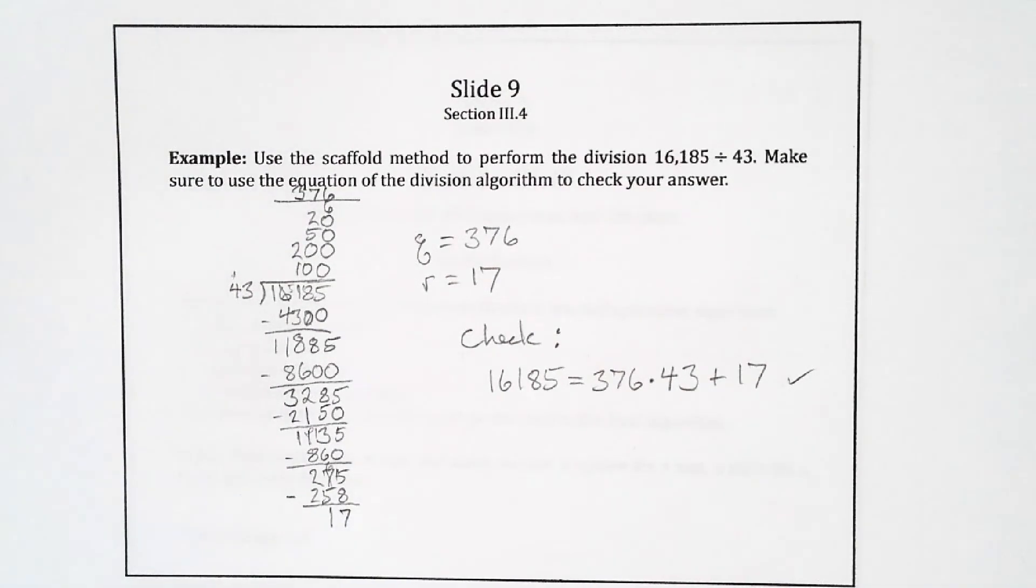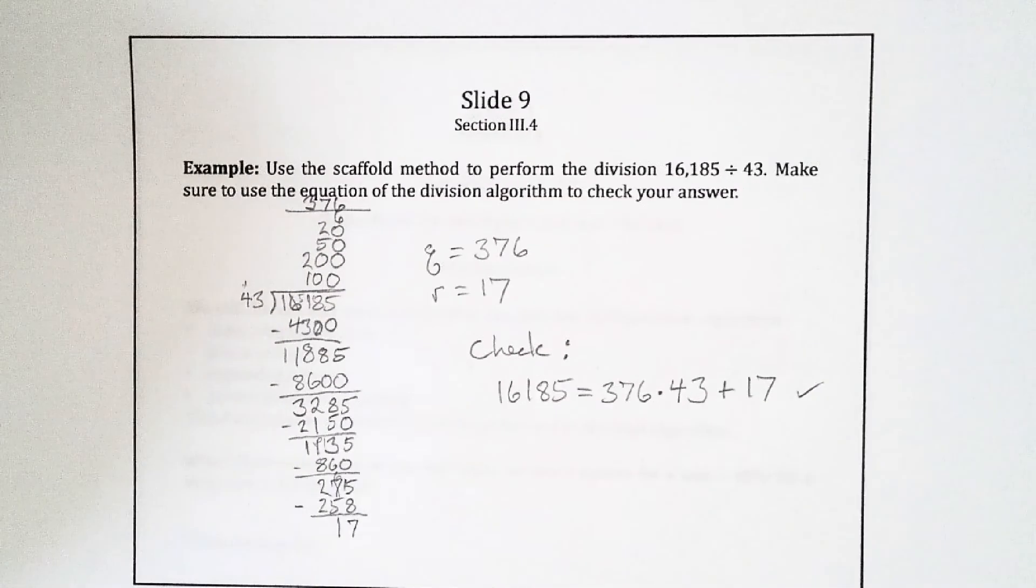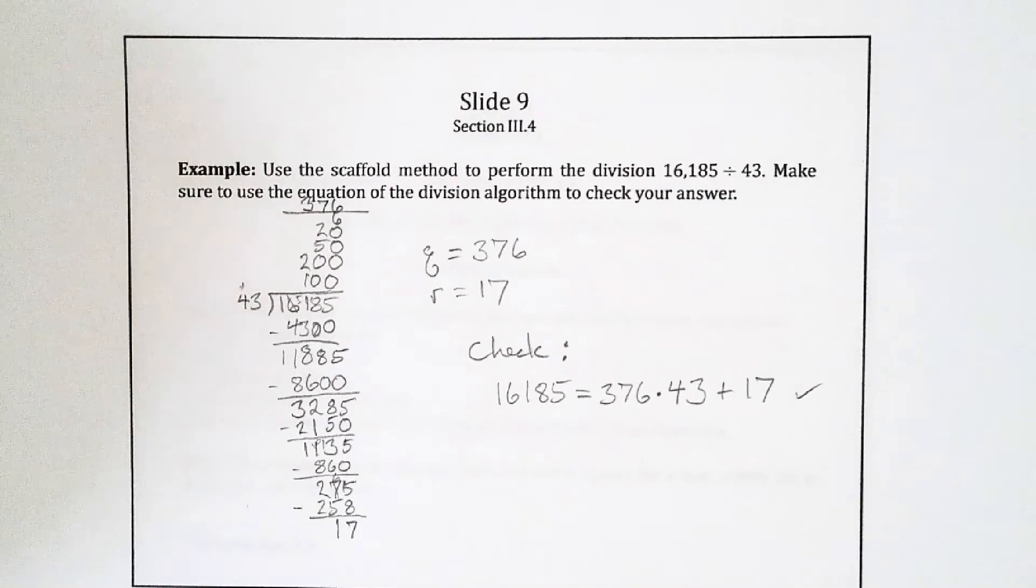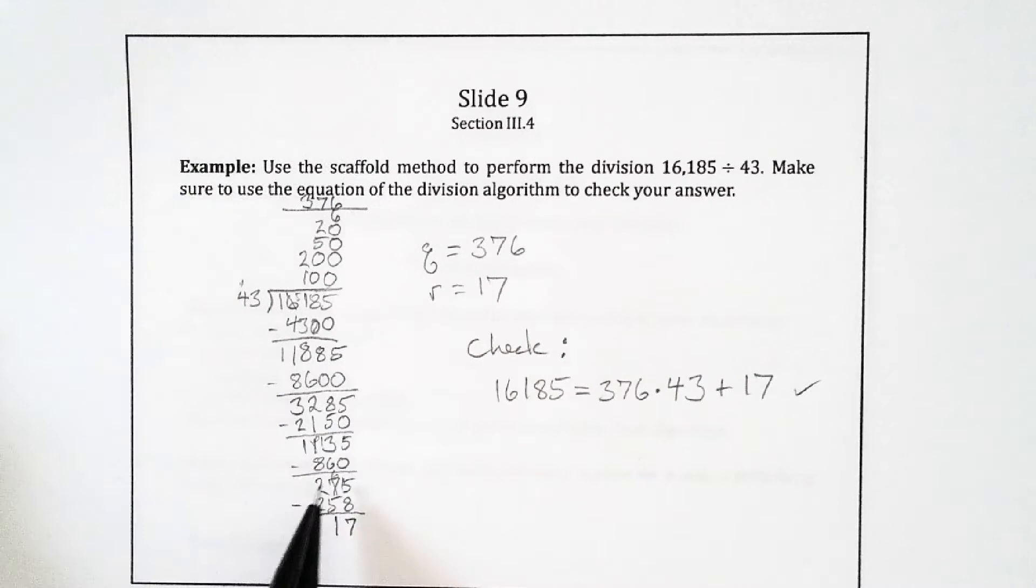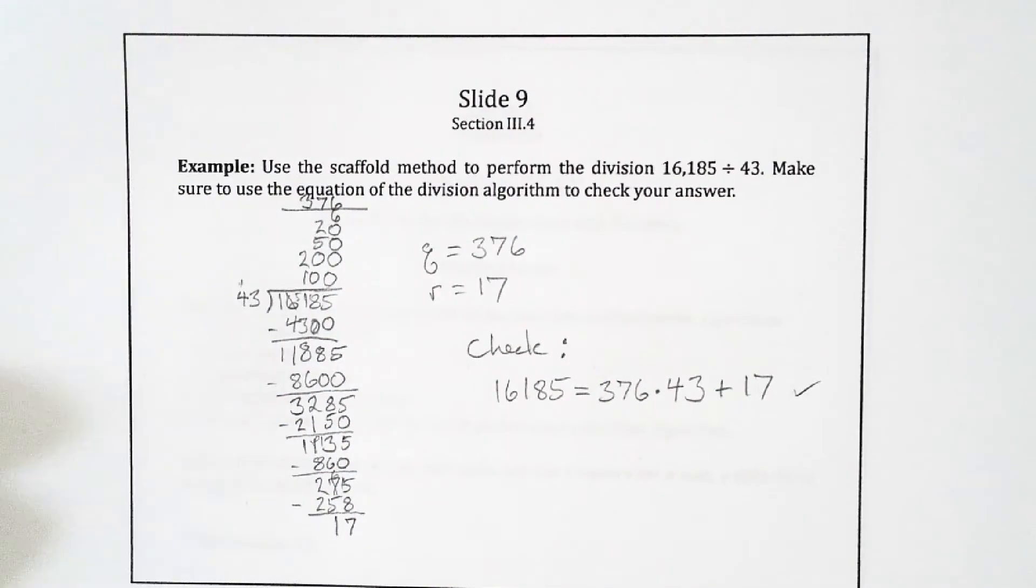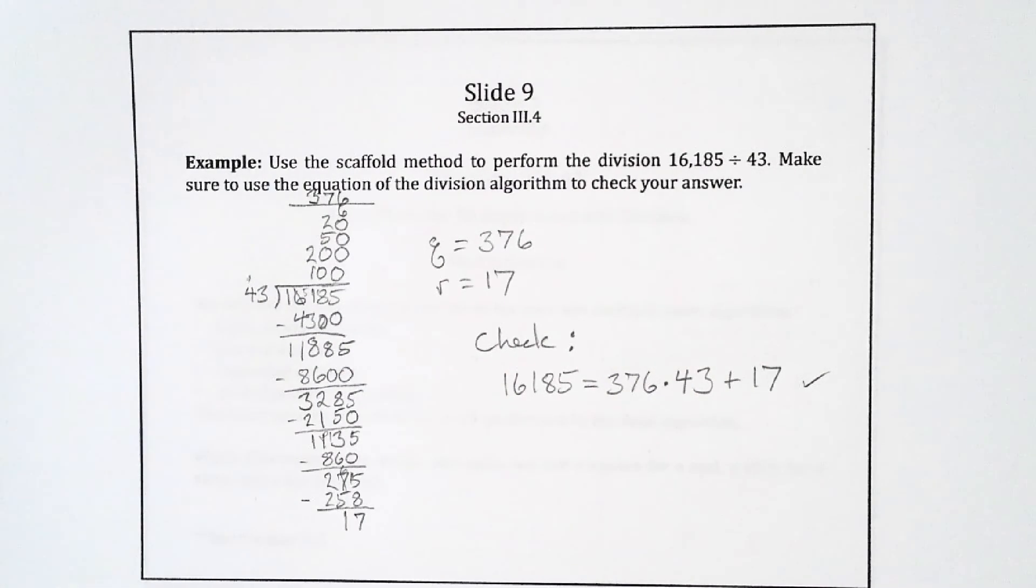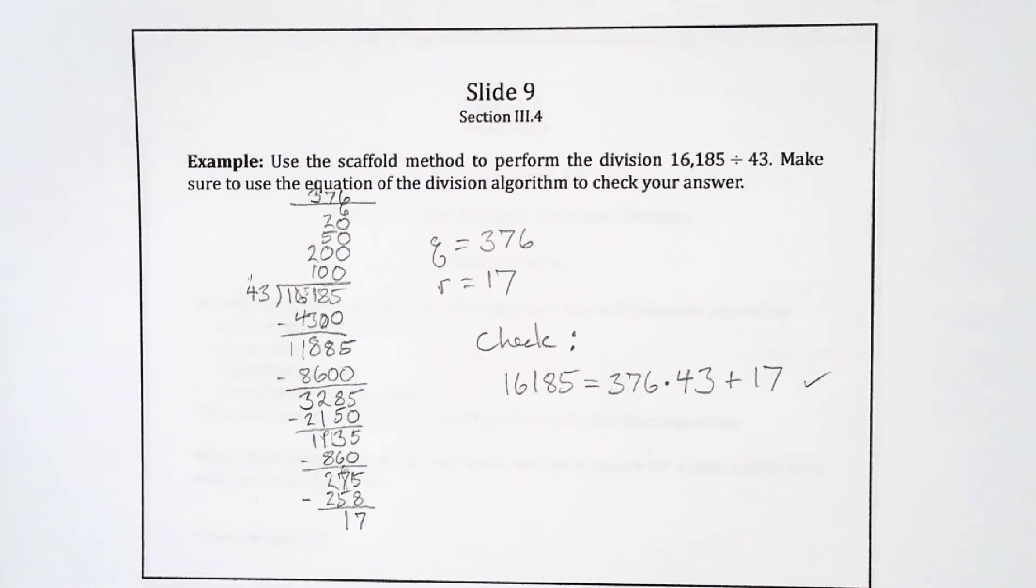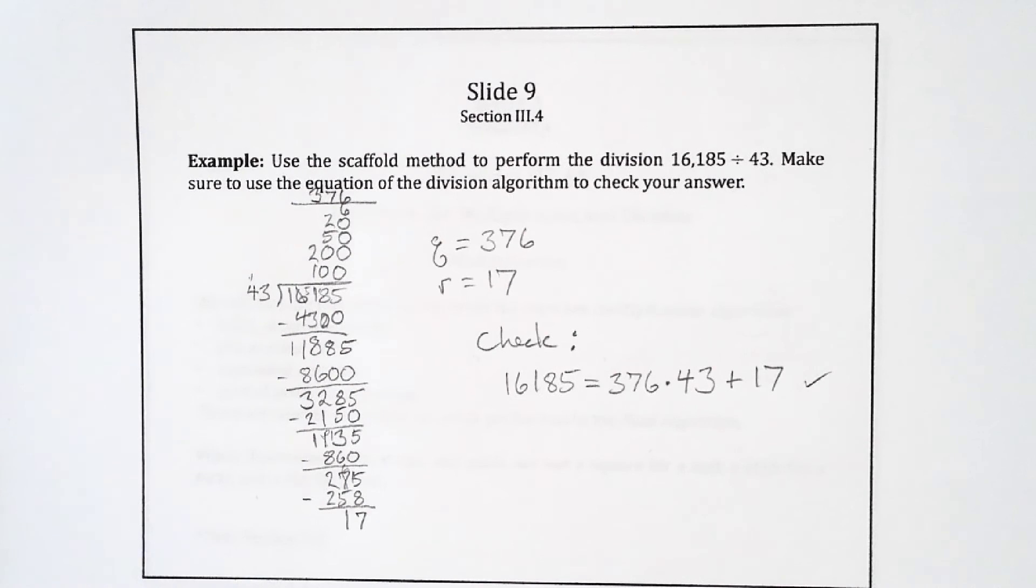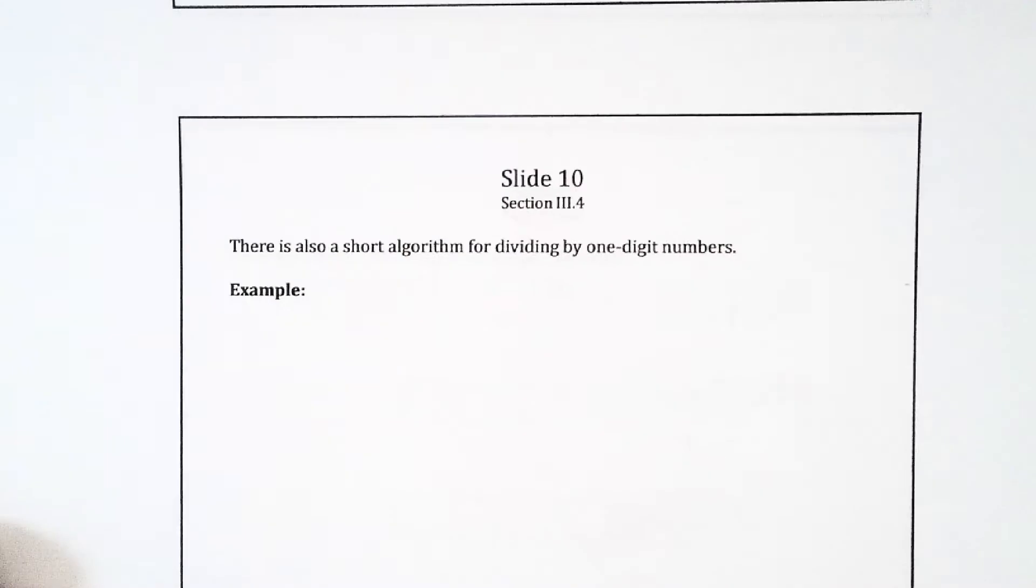So that's the scaffold method. That's one of the important takeaways from this section for the division part, being able to do that scaffold method. It's similar to traditional long division, but it has a lot more packed into it. You can really see what's happening. You can see the inner workings of the division. The textbook recommends using this rather than the traditional method. If you have the ability to choose when you're teaching, then I would recommend that as well, at least to introduce the topic.